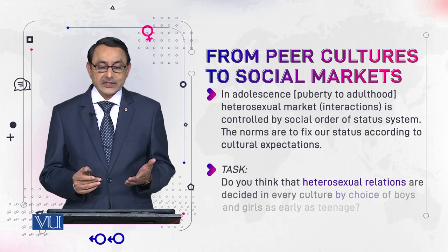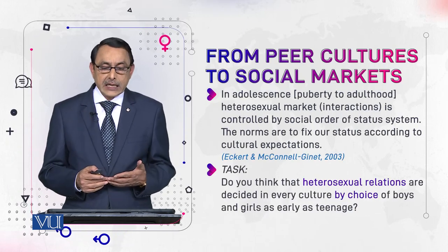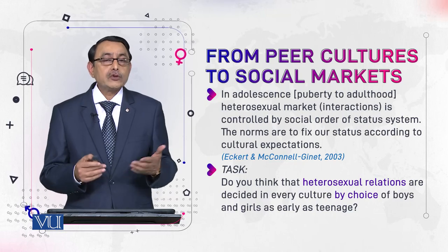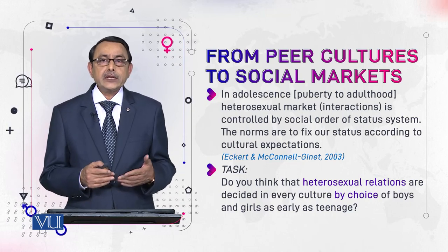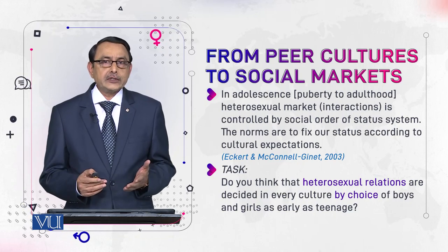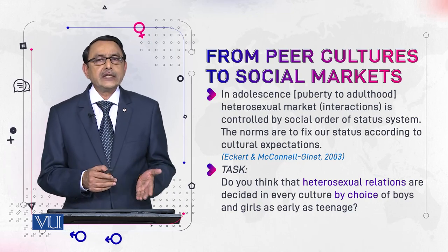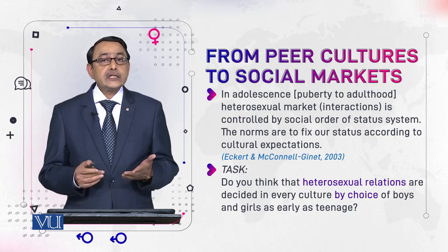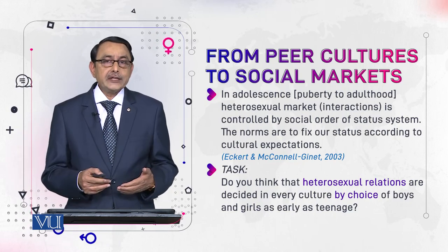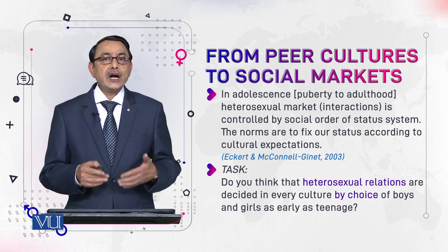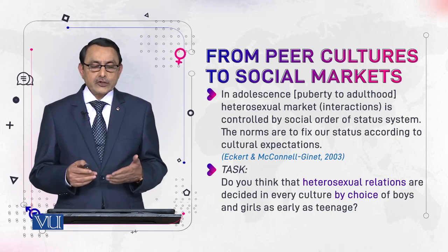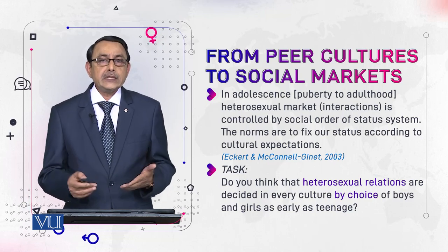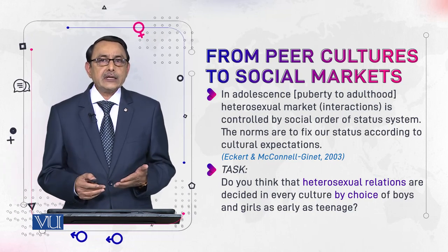In adolescence — the next stage of life and gender development, spanning from puberty to adulthood — we enter the heterosexual market. This is a new phase where people from different sexes interact, male and female, hence the term heterosexual. This stage is controlled by the social order of the status system, where norms fix our status and identity according to cultural expectations of what we would be as a male or female.